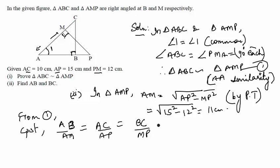So AB value, value of AB is unknown. Value of AM is 11 cm from here. AC is 10, MP is again given as 12, BC is unknown, and AP is given as 15 cm. So using this relation, we can find the unknown values of AB and BC.